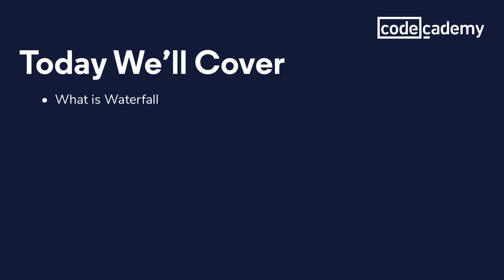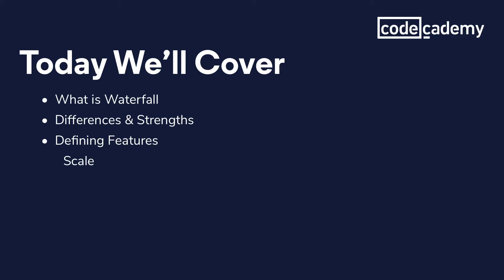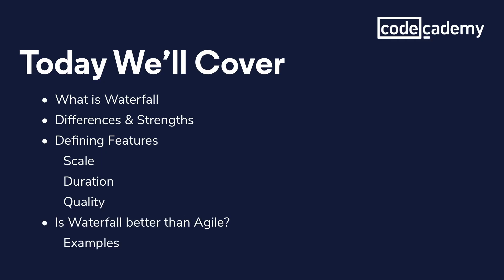In this video we're going to talk about what waterfall is and what are some of the key differences in strengths as opposed to agile. There are three main themes that set waterfall apart from agile: scale, duration, and quality. We'll wrap up by talking about if waterfall is better than agile and give you some examples to sink your teeth into so that you have a little bit more to chew on.